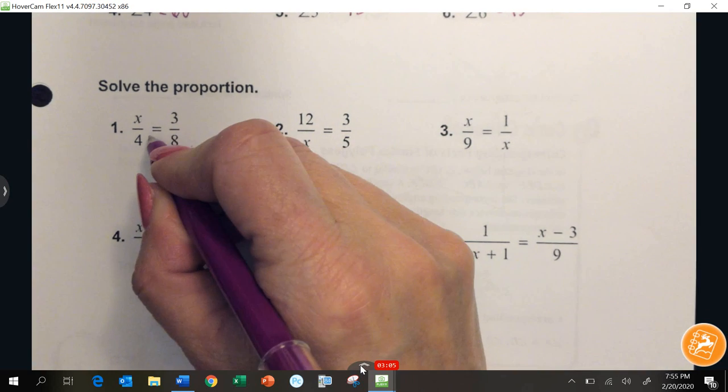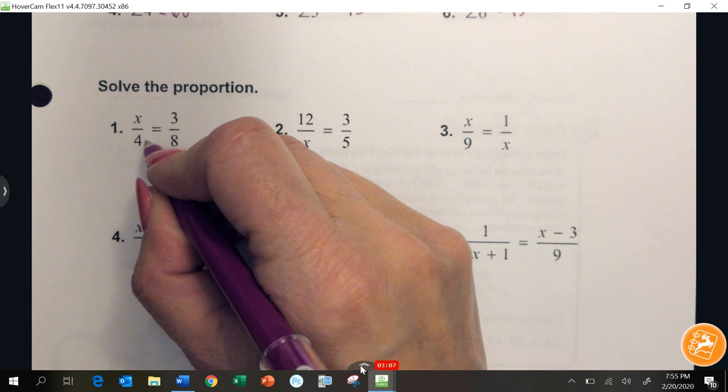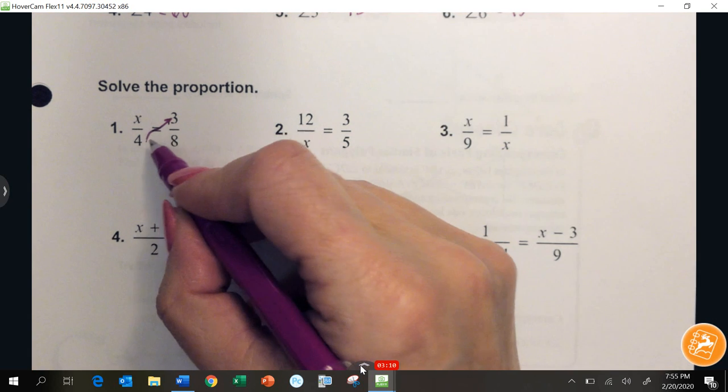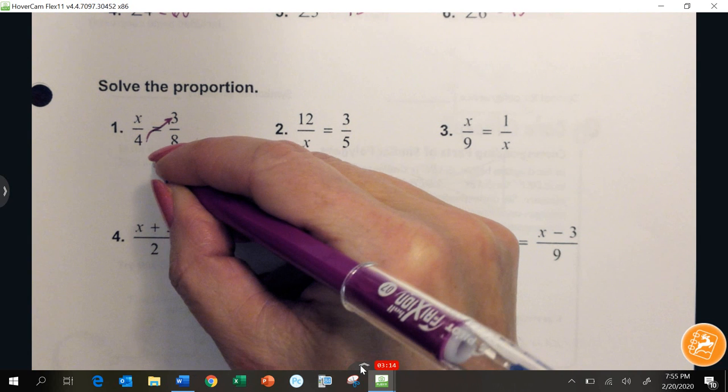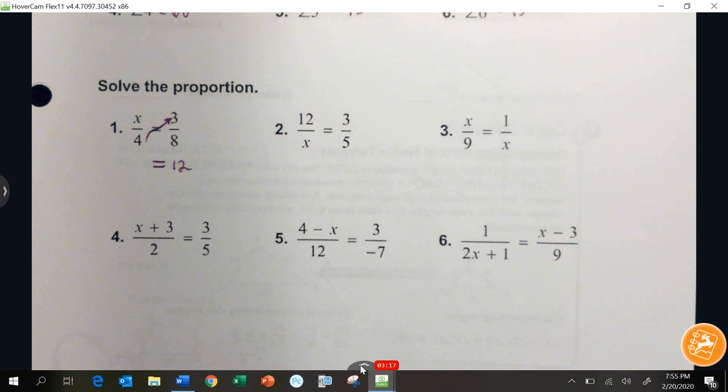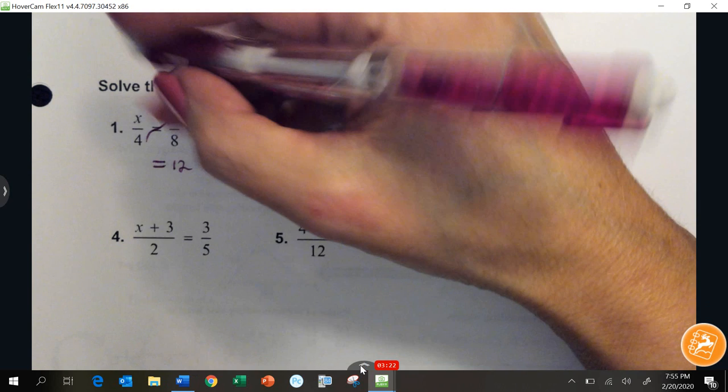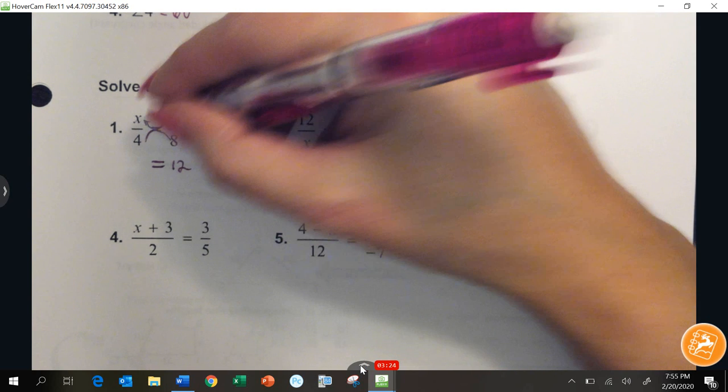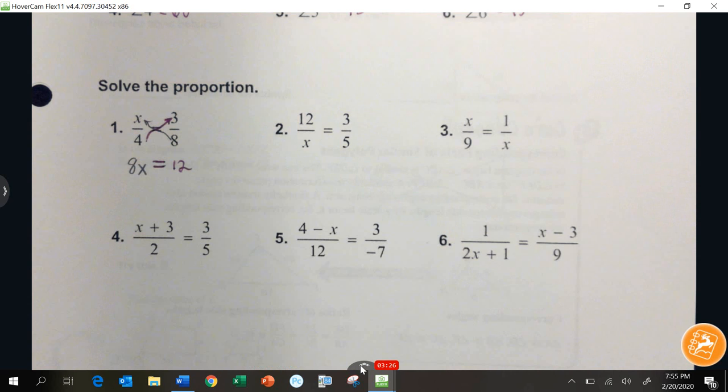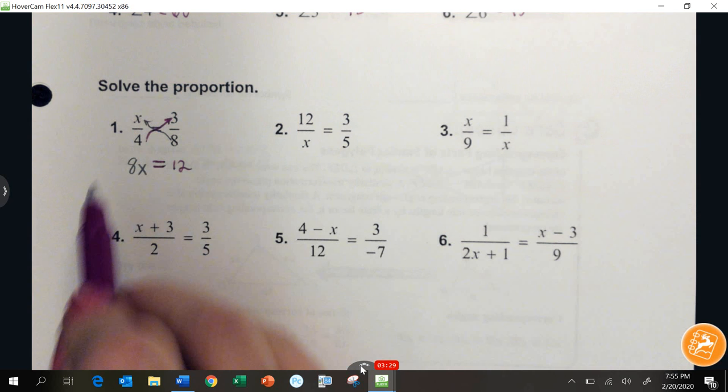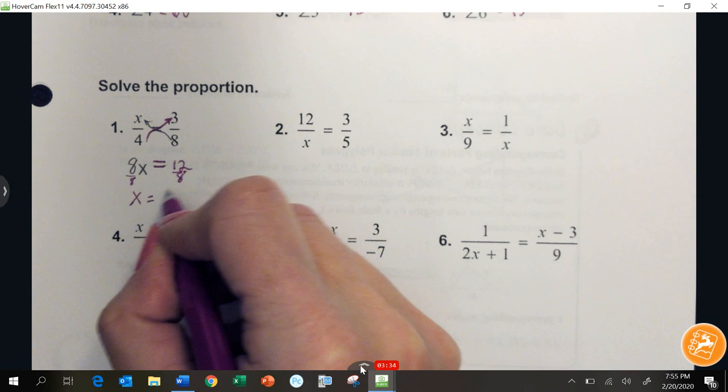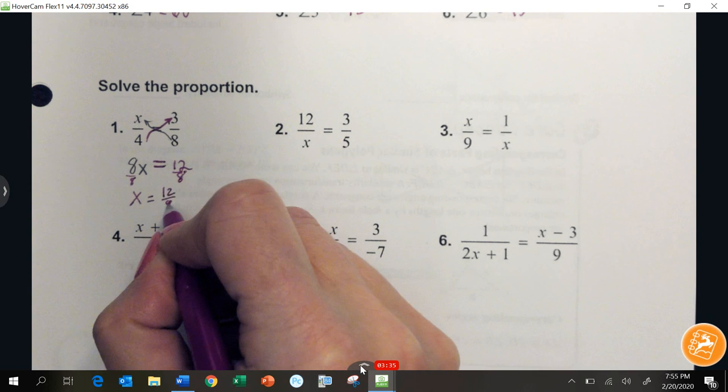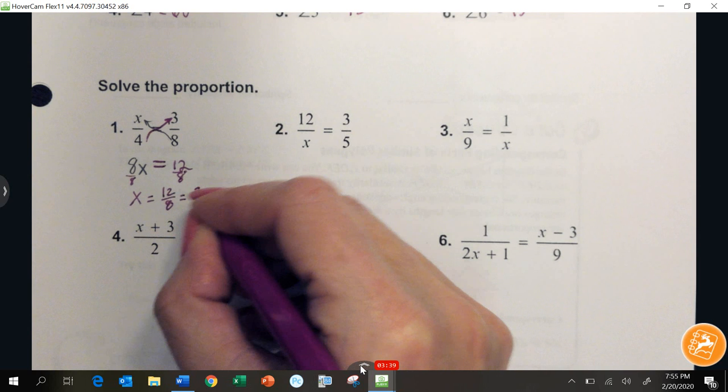To cross multiply, you're going to do 2 times 3. The equal sign stays in the same place. On the other side, I'm going to cross multiply, 8 times x. And 8 times x is 8x. 2 times 3 equals 6, so 8x equals 6. Divide both sides by 8. x equals 12 over 8, which reduces to 3 over 2.